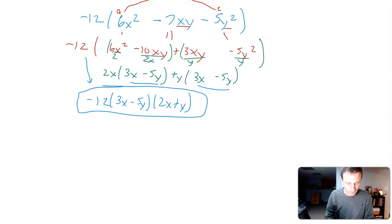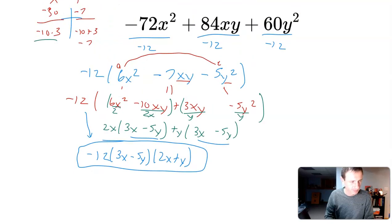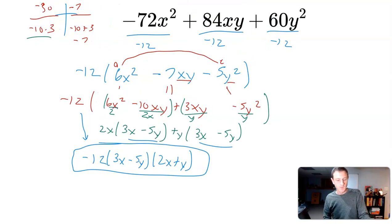GCF. What ends up happening is we end up with the same thing in parentheses, 3x - 5y. So you write it as one term because you're factoring that out. And then 2x + y. And there's our answer.